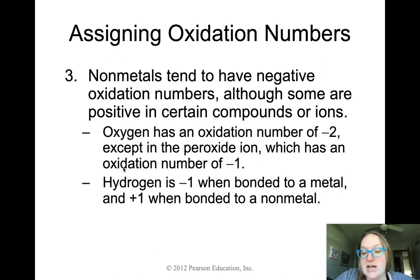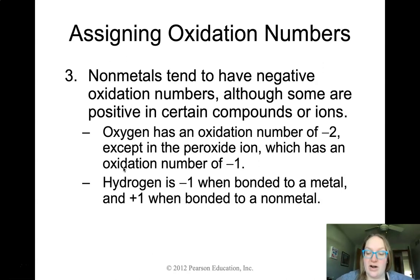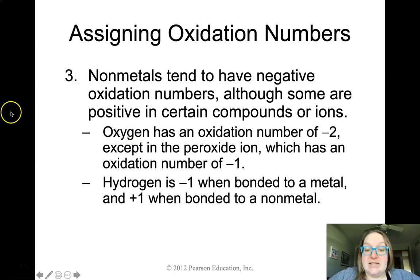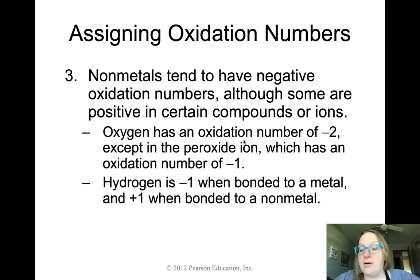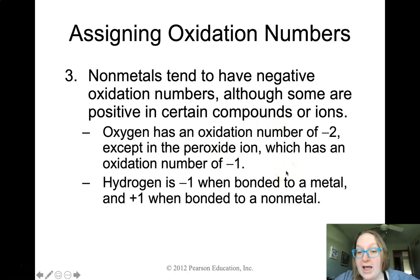Oxygen has an oxidation number of negative two, except in the peroxide ion where it has an oxidation number of negative one. This is a finite rule — oxygen can never be negative three, and oxygen can never be zero when it's combined with another ion.